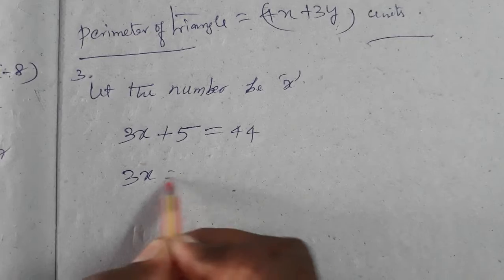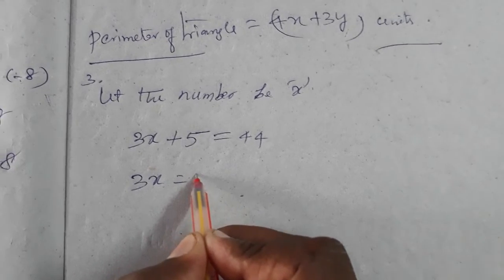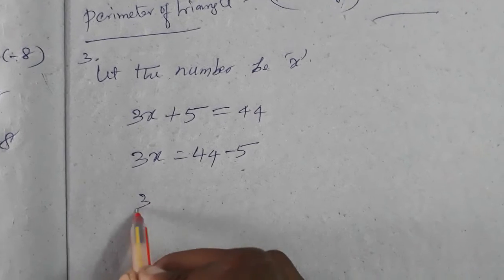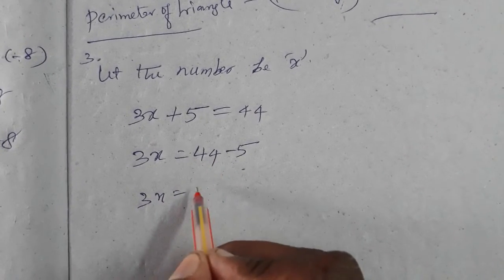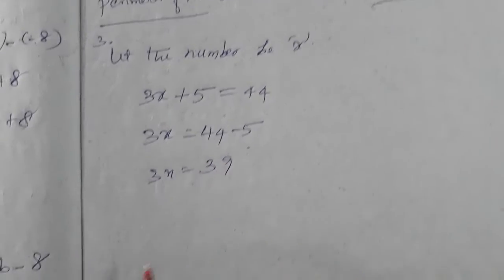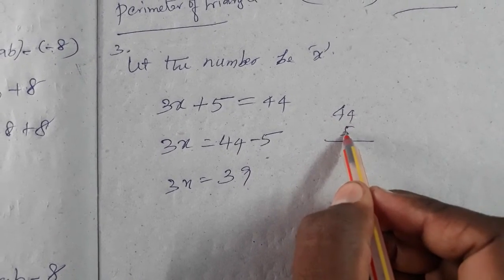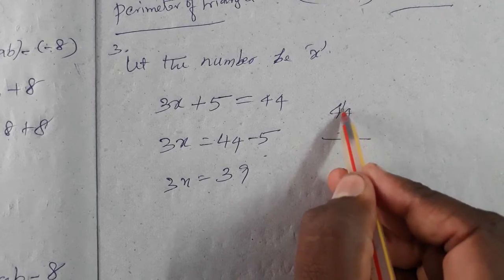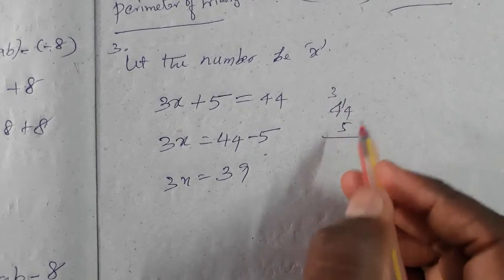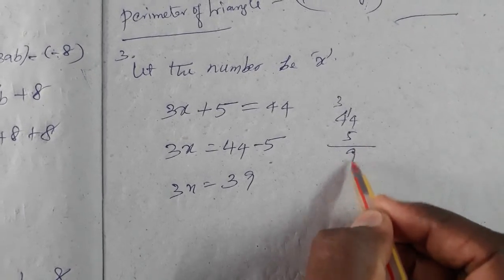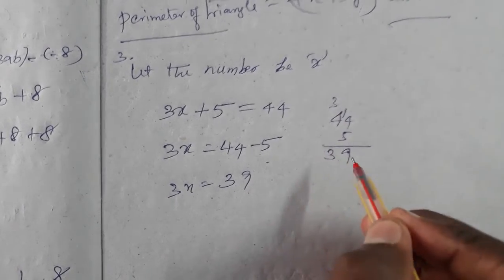So 3x plus 5 equals 44. Five goes to the right-hand side as minus. Then 3x equals 44 minus 5. We get 39. 44 minus 5: not possible directly, so borrow 1. 14 minus 5 is 9, 3 comes down, giving us 39.